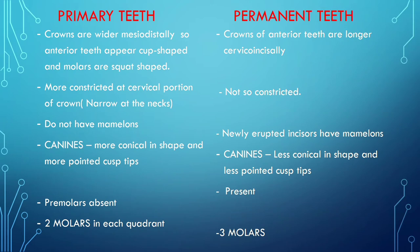Primary teeth do not have mamelons, while permanent teeth do. Mamelons are basically the curved edges on the incisal edge of the tooth — they are not present in primary teeth but are present in permanent teeth.